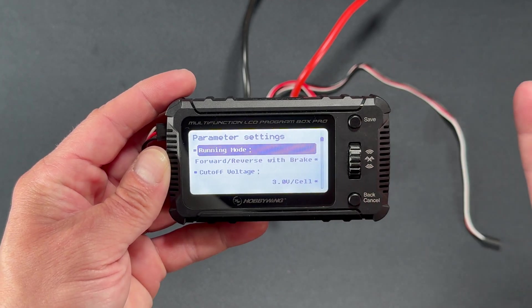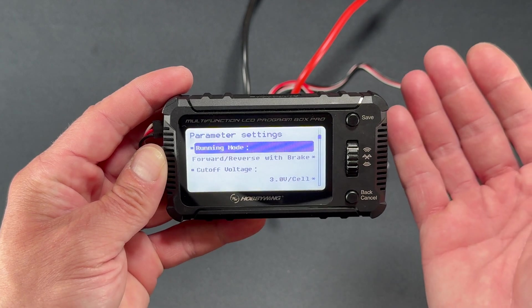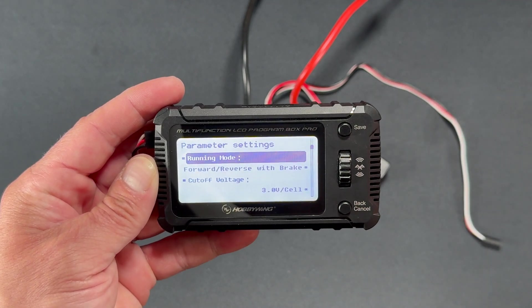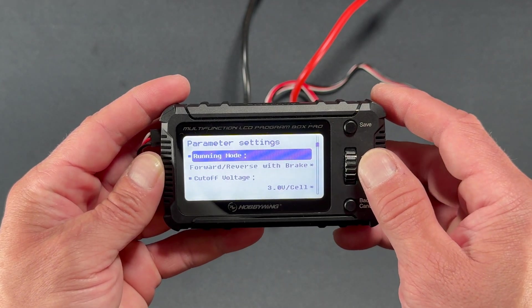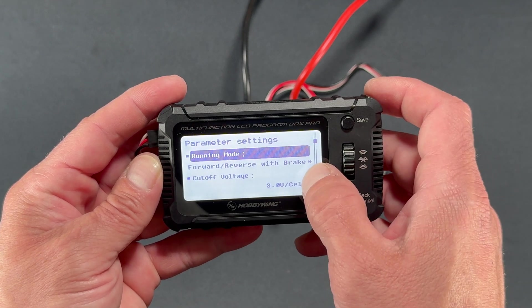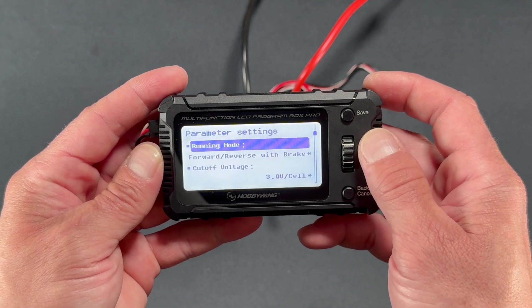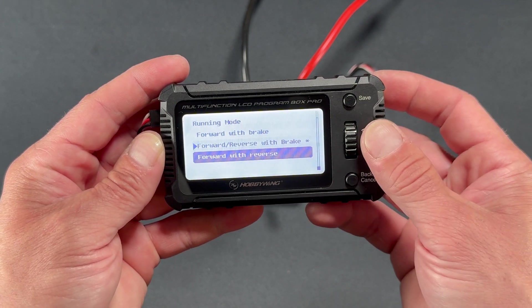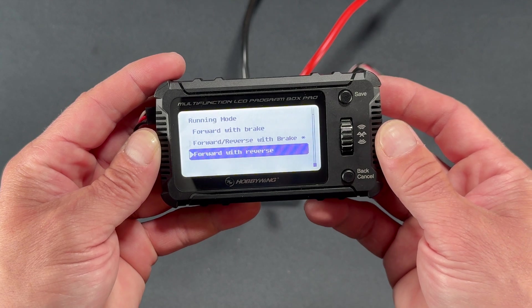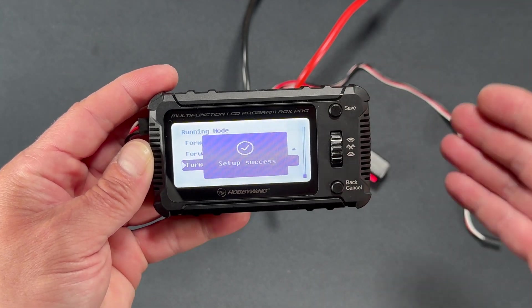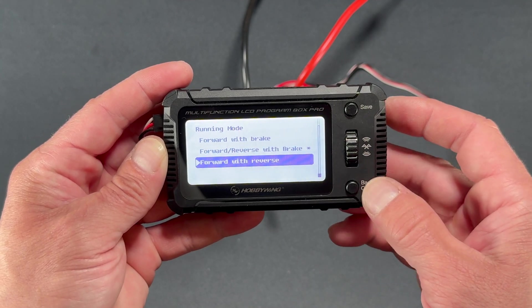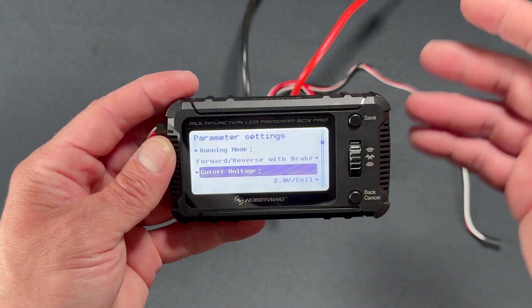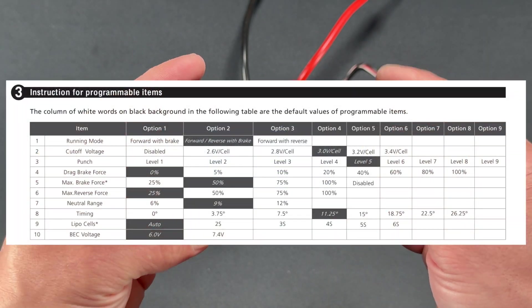First up is the running mode. That controls whether you have reverse or the rock crawl features that are there. You can put it into an instant reverse situation if you have something like that going on. The default settings are highlighted there with a little asterisk on the side. To get in and changing, you push down on the button, you make your selection by rolling the wheel. You push down on the button to select it, and then you hit save to actually save the setting into the speed control itself. We'll roll through the settings and we'll put the instruction manual up so it's a little easier to see.